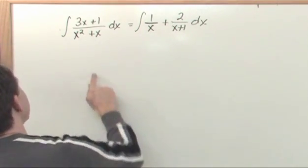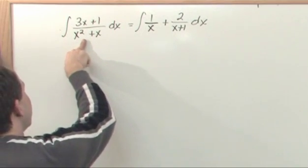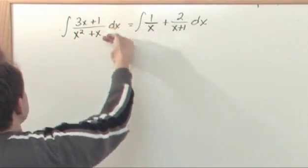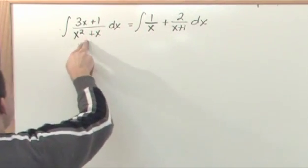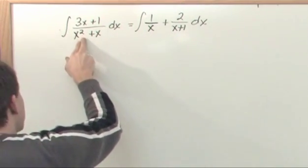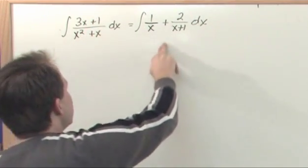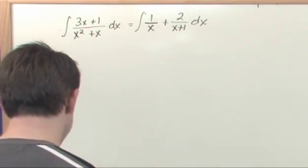So the trick is finding out how to change what you call a rational expression that has a polynomial on the top and a polynomial on the bottom. How do you systematically, in a bulletproof way, turn these functions, these rational functions, into partial fraction expansions? That's the trick.